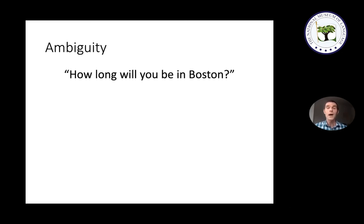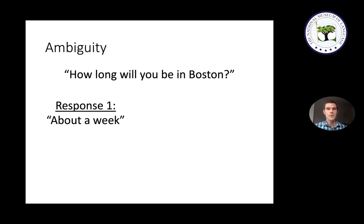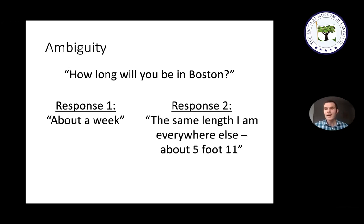Pretty much every sentence you've ever heard or uttered is likely to be ambiguous in some way, but most of the time we simply don't notice it. For example, suppose you've told a friend you're going to visit Boston next week, and your friend asks, 'How long will you be in Boston?' This question is ambiguous. The normal interpretation leads to an answer like 'about a week,' but there's another interpretation where the answer would be 'about five foot eleven.' Of course this is ridiculous, so normally you automatically rule out that ambiguity.